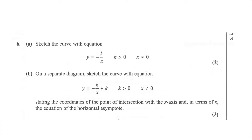On a separate diagram, sketch the curve with the equation y equals minus k upon x plus k, where k is greater than 0 and x is not equal to 0, stating the coordinates of the point of intersection with the x-axis and, in terms of k, the equation of the horizontal asymptote. The question carries three marks.